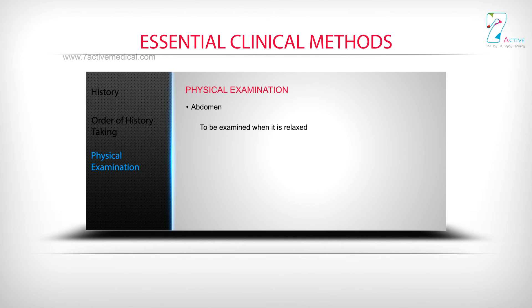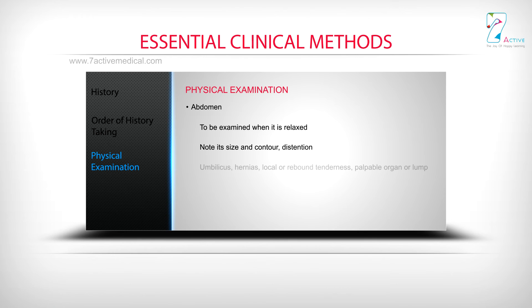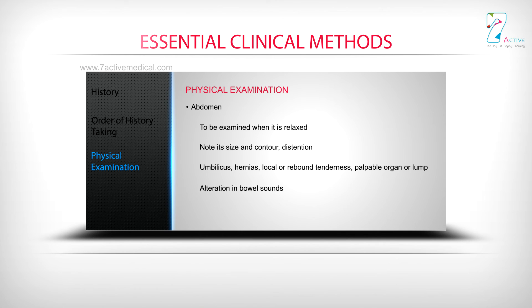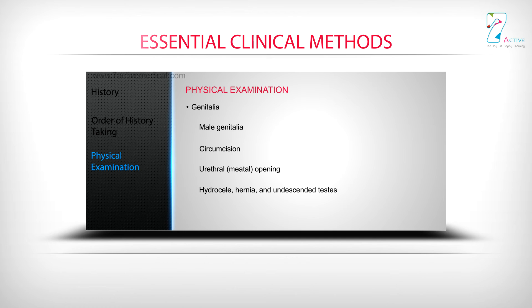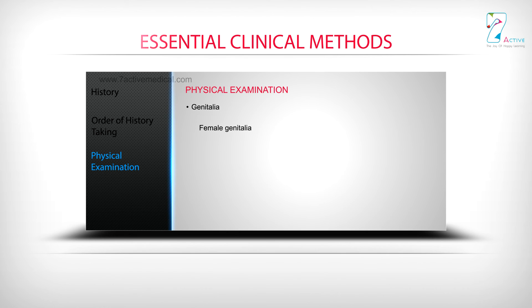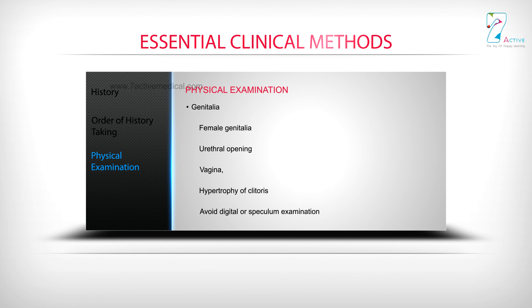Abdomen: to be examined when it is relaxed. Note its size and contour, distension, umbilicus, hernias, local or rebound tenderness, palpable organs or lumps, and alteration in bowel sounds. Genitalia - male: circumcision, urethral meatal opening, hydrocele, hernia, and undescended testis. Female genitalia: urethral opening, vagina, hypertrophy of clitoris; avoid digital or speculum examination.